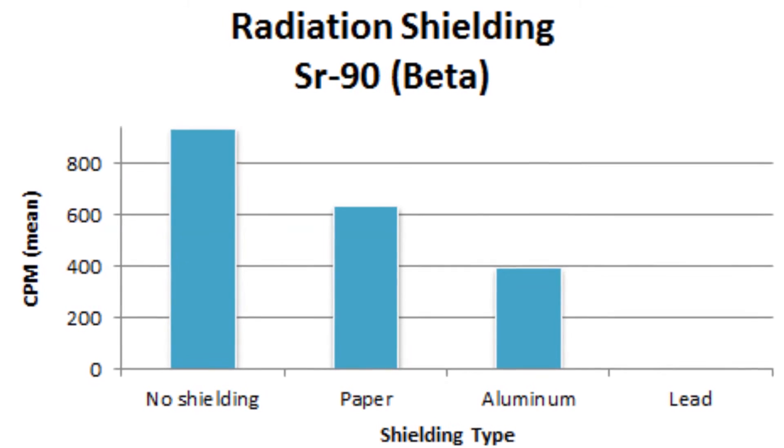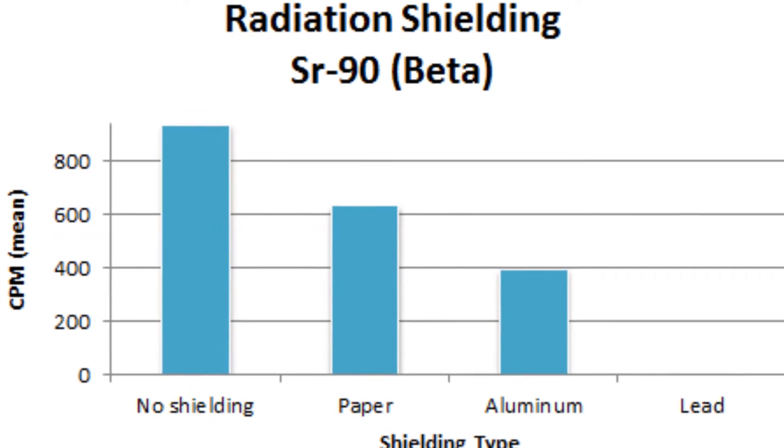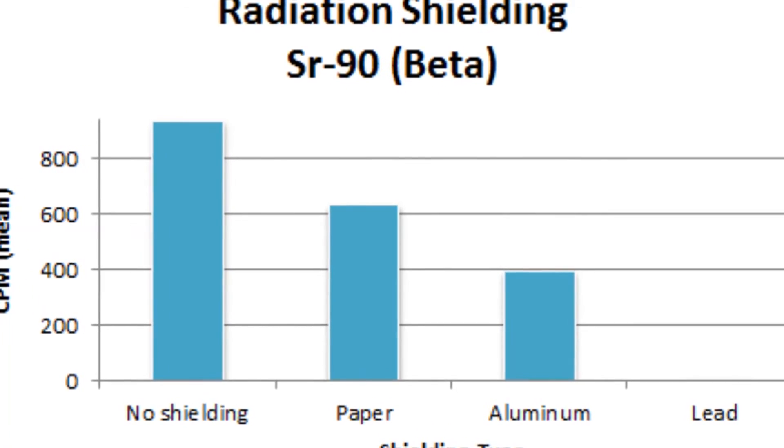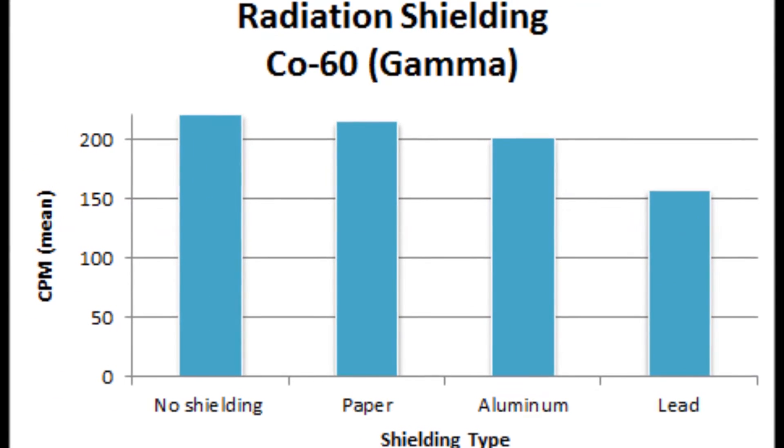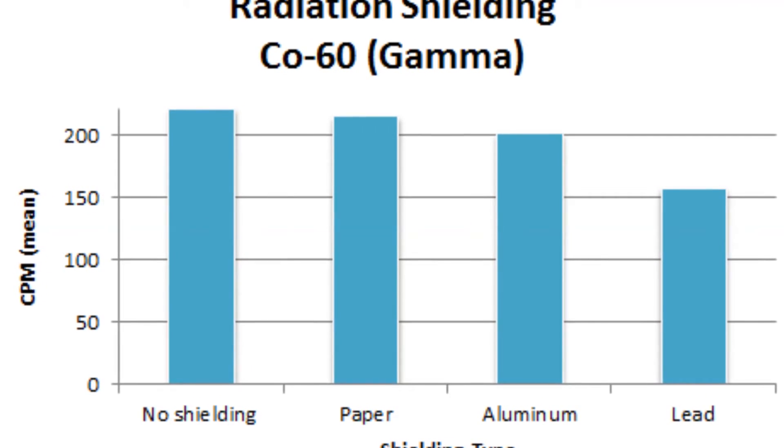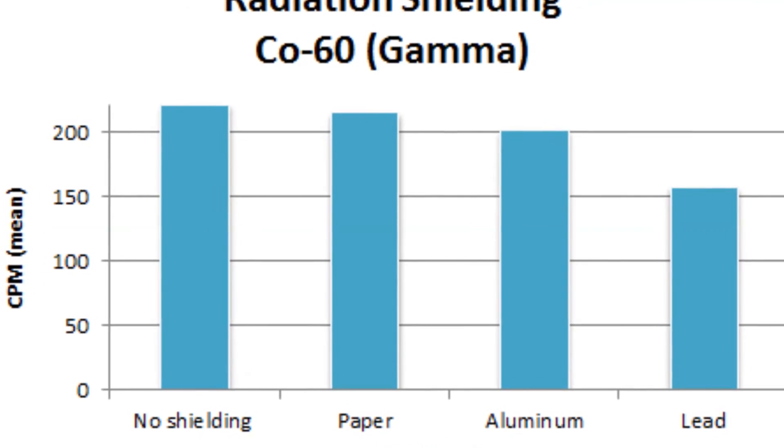Source CO60 gamma radiation had a very high CPM and was able to penetrate through all three shielding materials still maintaining a high mean CPM. This is because gamma radiation is extremely thin, which enables it to penetrate through very thick and compact materials.